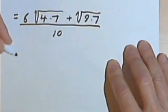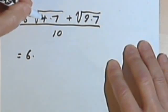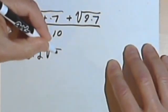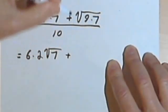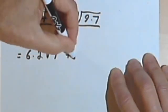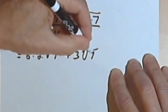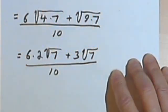Let's take the square roots out of this. So I have 6 times the square root of 4 is 2, so 6 times 2, times the square root of 7, plus the square root of 9 is 3, 3 times the square root of 7, times the square root of 7 over 10.